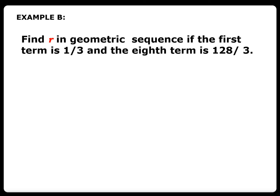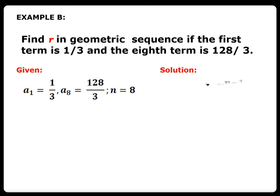Example B: Find r in the geometric sequence if the first term is one-third and the eighth term is 128 over 3. The given: a_1 is one-third, a_8 is 128 over 3, and n is 8. We're looking for r. Using the formula a_n = a_1 times r raised to n minus 1, by substitution we have 128 over 3 equals one-third times r raised to 8 minus 1.